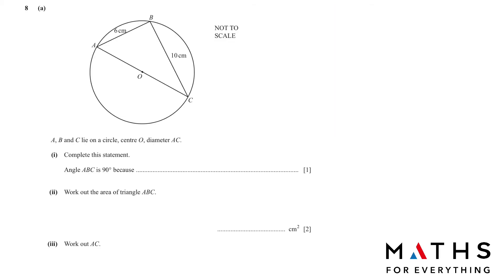Question number 8. We have been given a circle and a triangle in the circle. This is the diameter. Complete the statement. Angle ABC is 90 degrees. It means that your angle B is 90 because the angle opposite the diameter is equal to 90 degrees. This is one of the circle theorems. Work out the area of triangle ABC. Area can be found by half times base times height. As it is 90 degrees, BC is a perpendicular height. So we can write half times 6 times 10, which is 30 square centimeter.